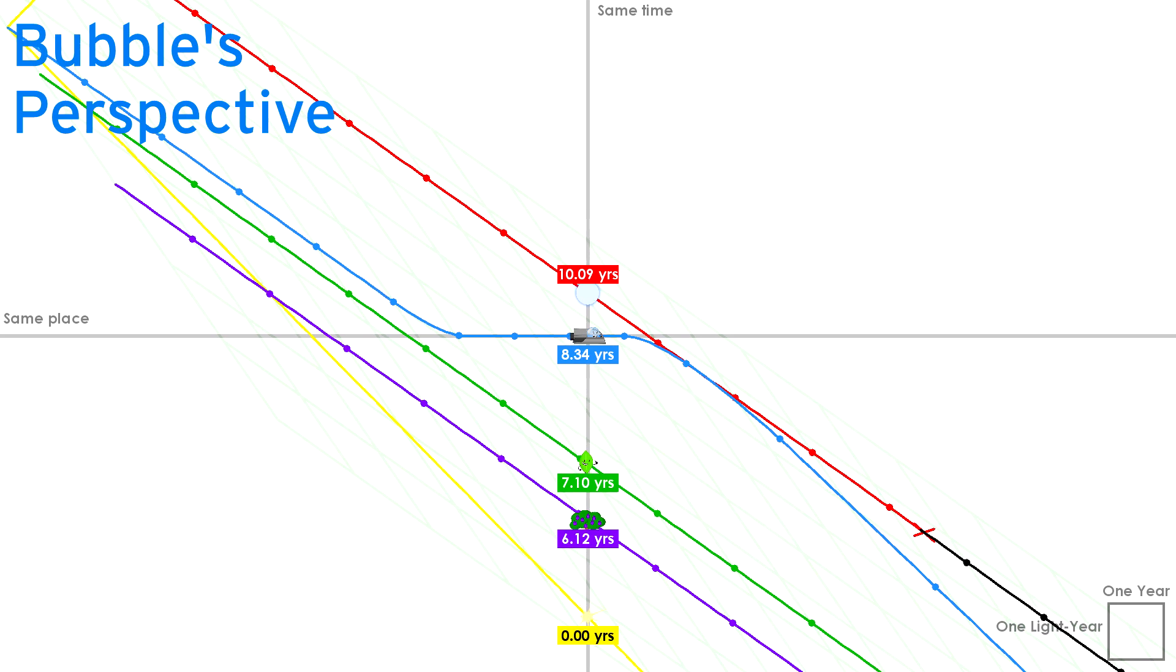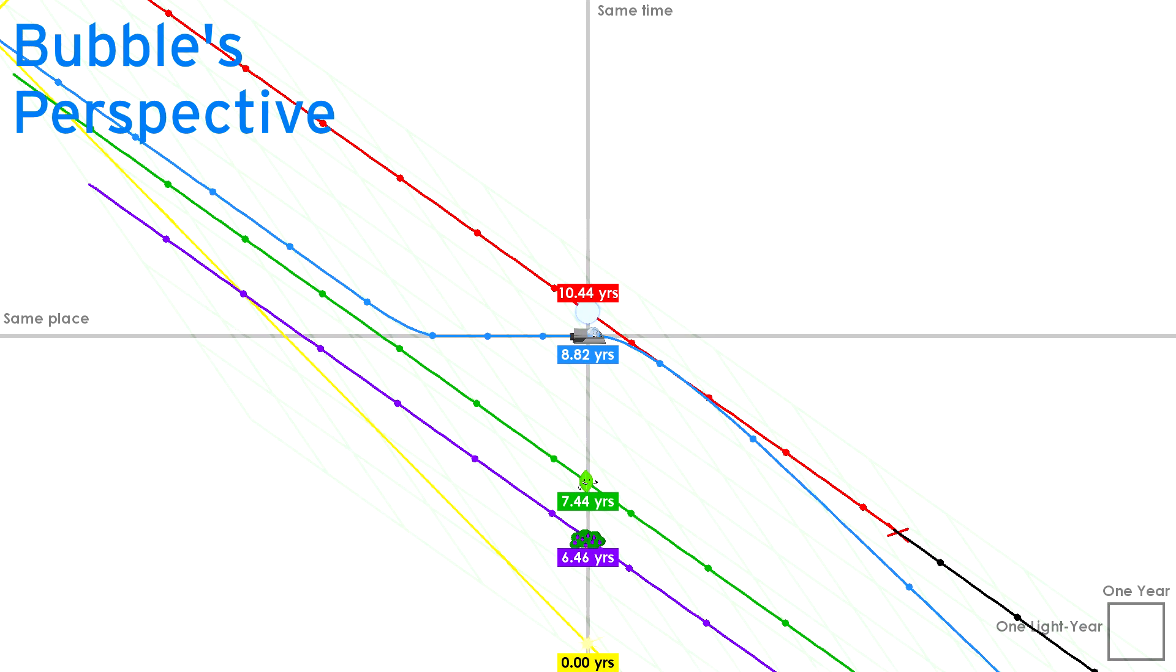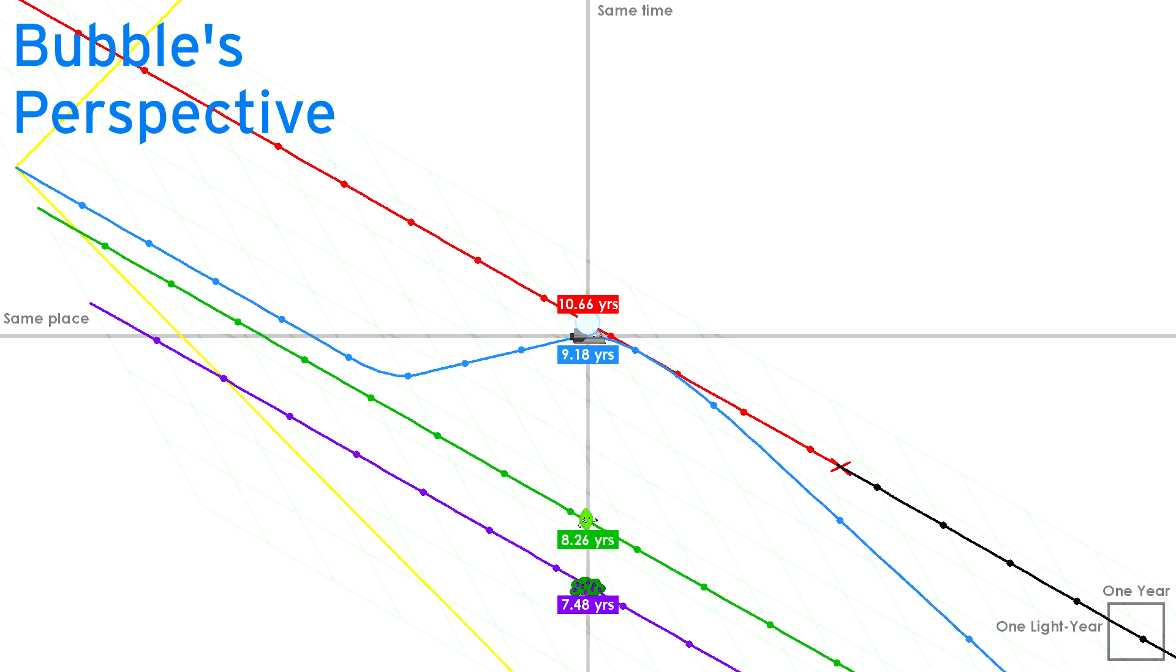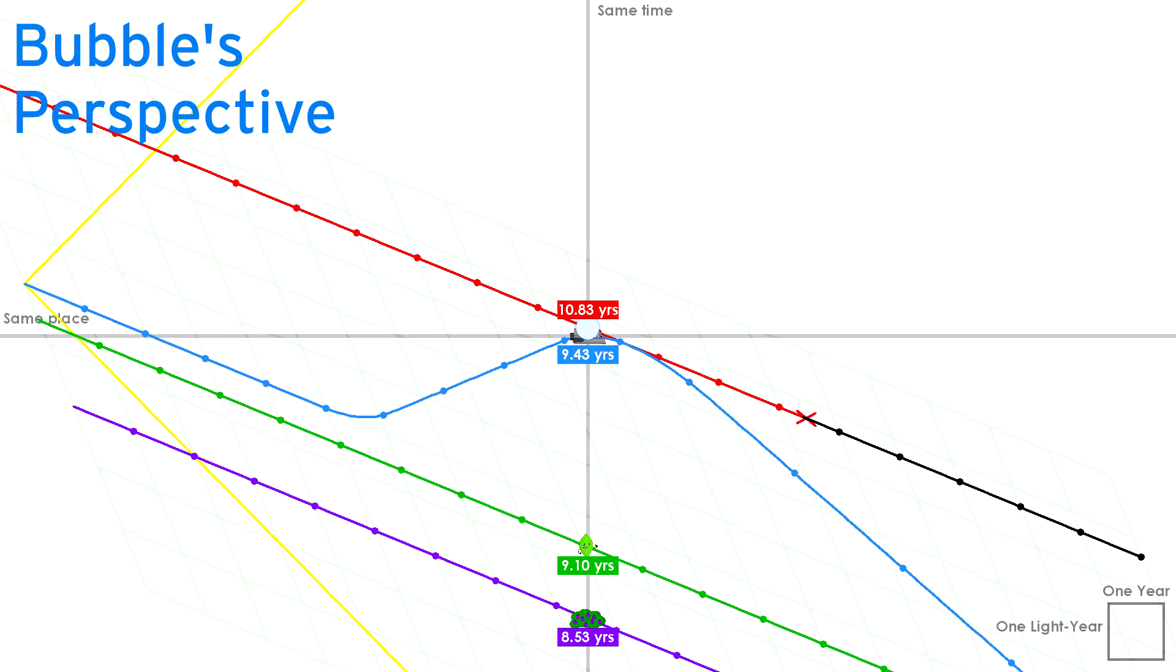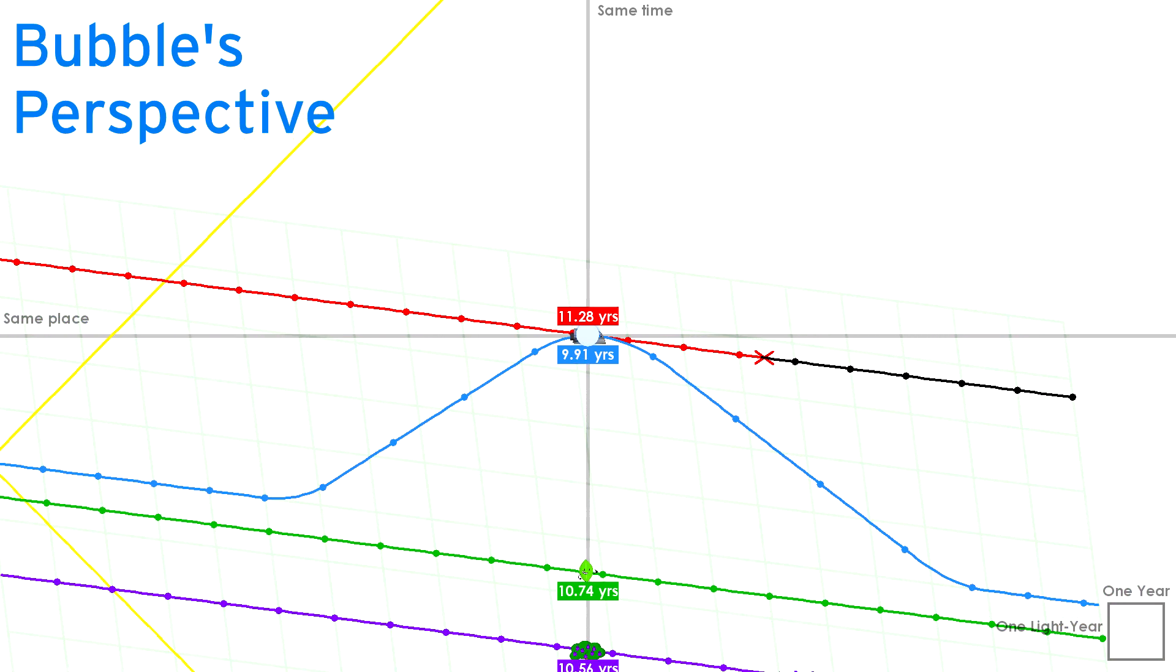Recall that fast moving objects move slower in time. Well, now we can see why. From Leafy's perspective, every vertical grid line is a year, so she will age one year every time she crosses a vertical grid line. None of Bubble's endeavors really affect Leafy's age.